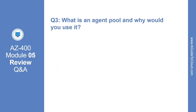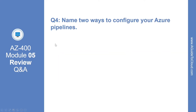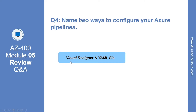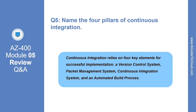Question 3: what is an agent pool and why would you use it? You can organize agents into agent pools. An agent pool defines the sharing boundary. In Azure Pipeline, agent pools are scoped to the Azure DevOps organization, so you can share an agent pool across projects. Question 4: name two ways to configure your Azure pipelines. The correct answer is visual designer and using a YAML file. Question 5: name the four pillars of continuous integration. The correct answer is a version control system, package management system, continuous integration system, and automated build process.